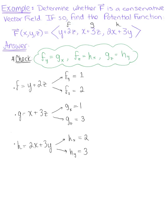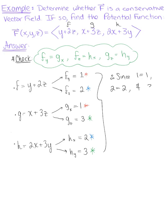Now let's check our work. Does the partial derivative of f with respect to y equal the partial derivative of g with respect to x? It does — since 1 equals 1. Does the partial derivative of f with respect to z equal the partial derivative of h with respect to x? It does — since 2 equals 2. And does the partial derivative of g with respect to z equal the partial derivative of h with respect to y? Yes — since 3 equals 3. Therefore, the vector field F is conservative.